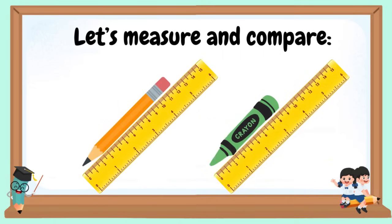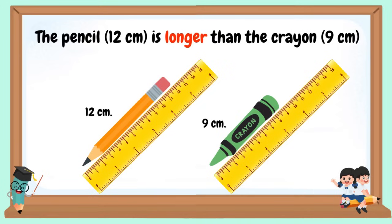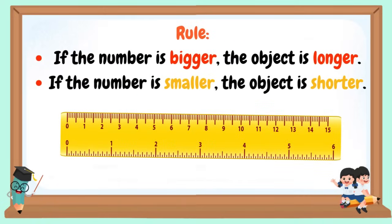Let's measure and compare. The pencil, which is 12 cm, is longer than the crayon, which is 9 cm in length. Rule: If the number is bigger, the object is longer. If the number is smaller, the object is shorter.